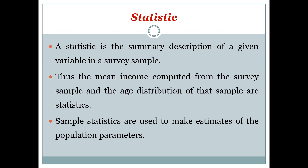S stands for statistic and S stands for sample. A statistic is the summary description of a given variable in the survey sample — this relates to the sample, while parameter relates to the population. The mean income computed from the survey sample and the age distribution of the sample are statistics. The same value taken from the sample would be called a statistic, and the very same value for the population would be referred to as a parameter. Sample statistics are used to make estimates of population parameters.